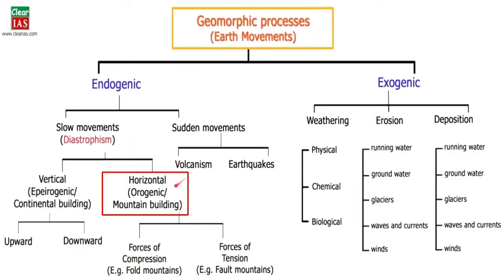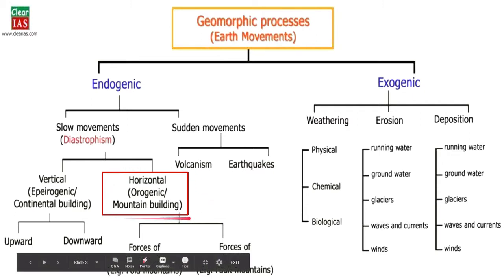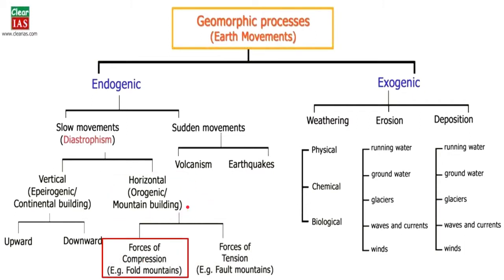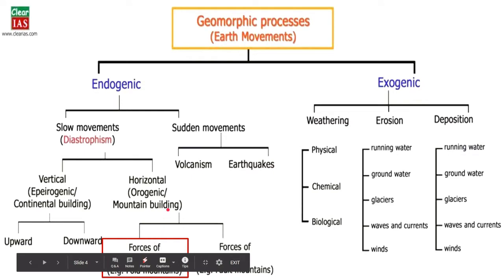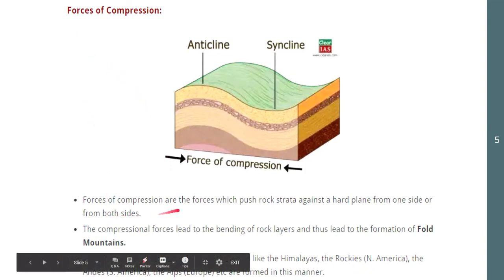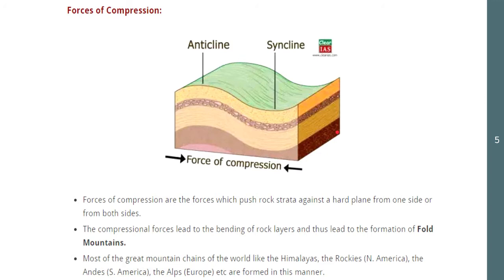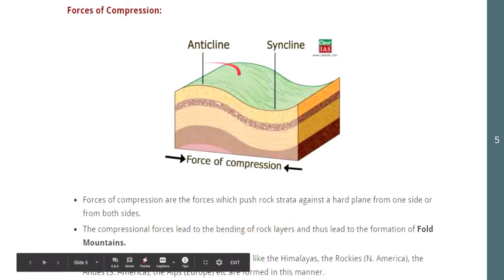In the previous video, we talked about plate tectonics and how they helped build mountains on the continent. In this video, we focus on the two types of mountains formed through orogenic processes. The first is formed through forces of compression — specifically your fold mountains. Forces of compression push rock layers or rock strata against a hard plane from both sides, and the compression due to plate tectonic action bends the rock layers to create fold mountains.